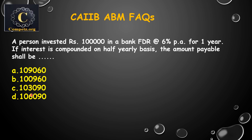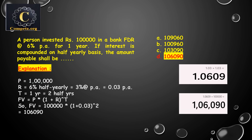Before seeing the answer, we will try to understand the question by noting down the given values. Principal amount P is 1 lakh. Rate of interest R is 6 percent per annum for one year. The interest is compounded on a half-yearly basis — make this an important point.